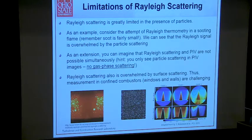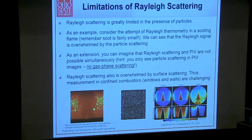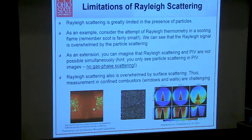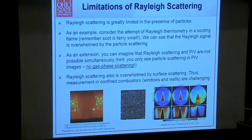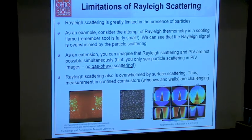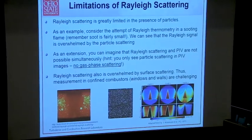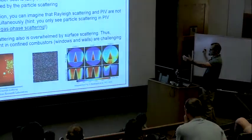Here's an example — Rayleigh scattering in a premixed flame in the presence of dust. In the dust-free region, where it's hot, particles get incinerated and burned. But anywhere else you get this extremely overwhelming signal from the particle, so you can't discern any information there. There's a giant difference between the particle phase and the gas phase.